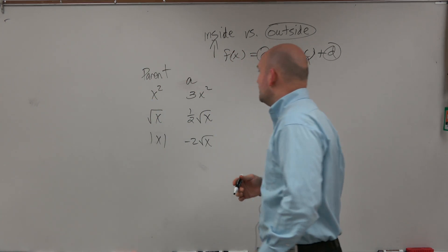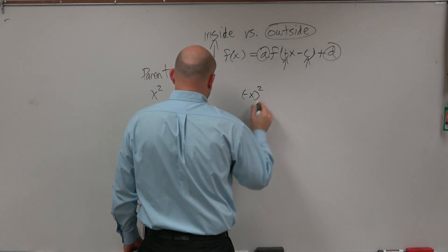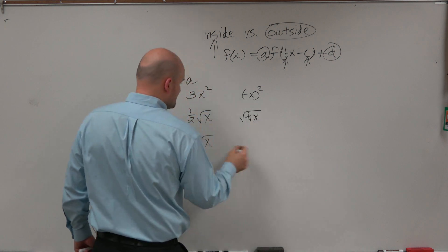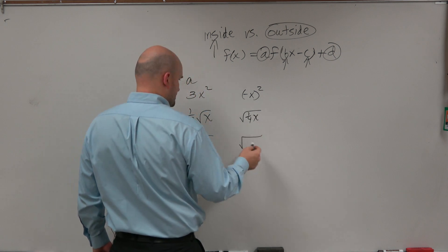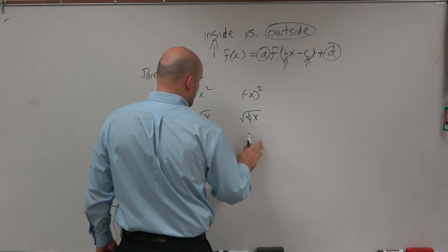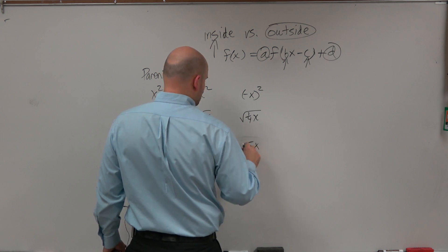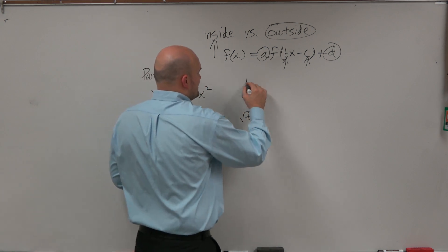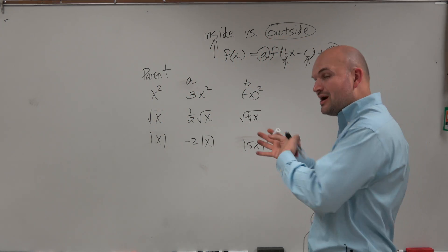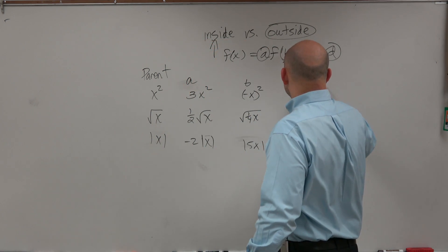A b might look something like negative x squared, the square root of one-fourth x, or absolute value of 5x. Notice the difference: the a's are outside of the function and the b's are inside of the function. That's very important, because we need to understand what exactly a and b do.